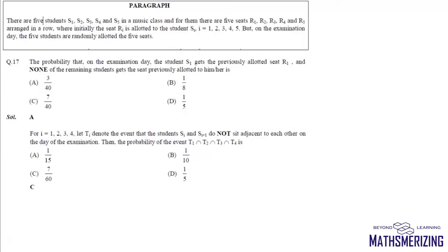The question is: there are 5 students S1, S2, S3, S4 and S5 in a music class. For them, there are 5 seats R1, R2, R3, R4 and R5 arranged in a row. Initially seat Ri is allotted to student Si. But on the examination day, the 5 students are randomly allotted the 5 seats. Find the probability that student S1 gets the previously allotted seat R1 and none of the remaining students gets the seat previously allotted to him or her.